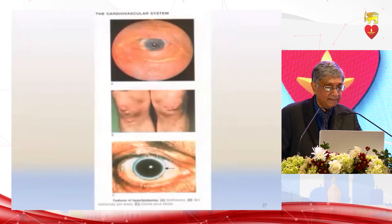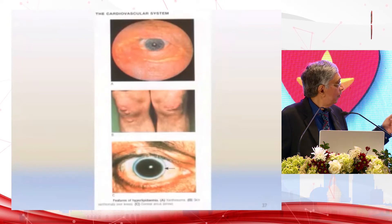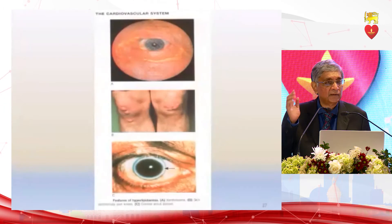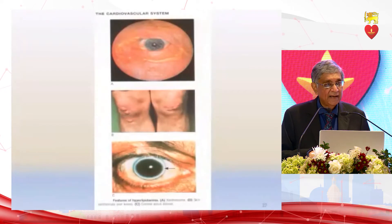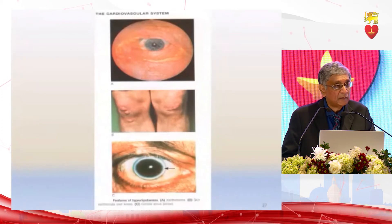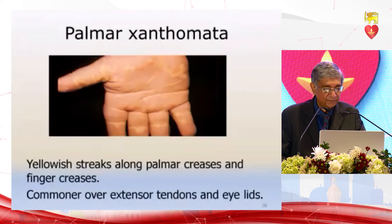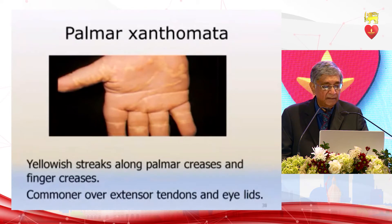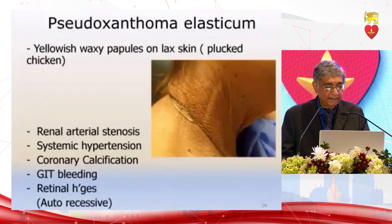The classical hyperlipidemia changes include xanthelasma, either in the upper or lower lid, and xanthomata over extensor tendons — over the olecranon, the neck, over the knees, and over the hands. It is in the extensor tendons that the xanthomata occur — why not the flexor tendons is unknown. Then there is arcus cornealis, and sometimes you get palmar xanthomata in the palmar creases.